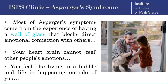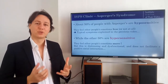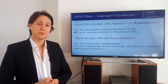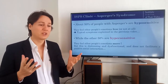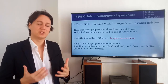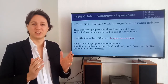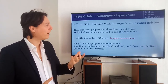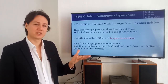When you have this wall of glass, your heart brain cannot really feel other people's emotions and you feel like living in a bubble and life is happening outside of you. In this video today, we will talk about another aspect of this problem. We've been describing the typical symptoms of Asperger's syndrome where you don't feel other people's emotions. However, almost half of people who have this problem actually explain something completely different. They feel this separation but they also feel other people's emotions in a way that is distressing and dysfunctional. So we're going to talk about the differences between hyposensitive people and hypersensitive ones regarding Asperger's syndrome.